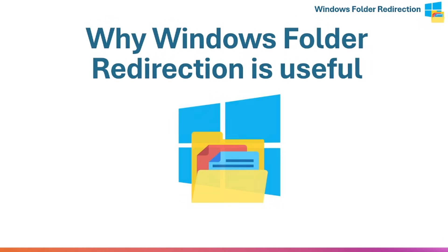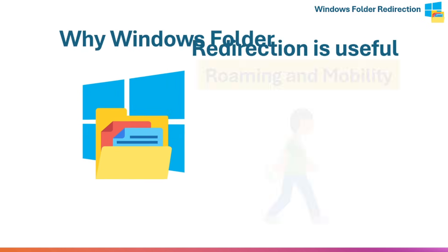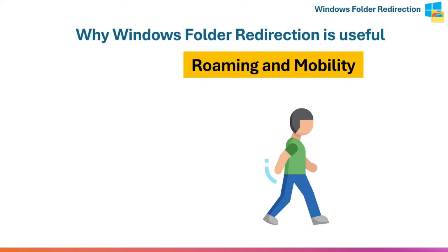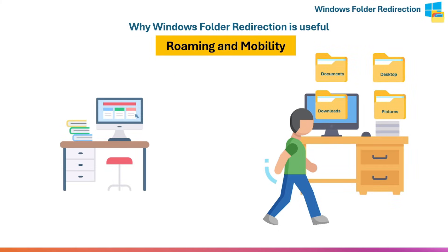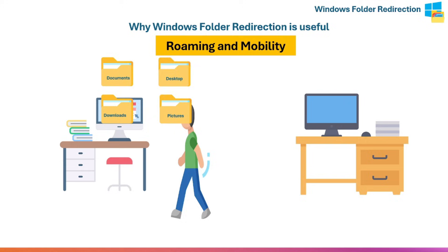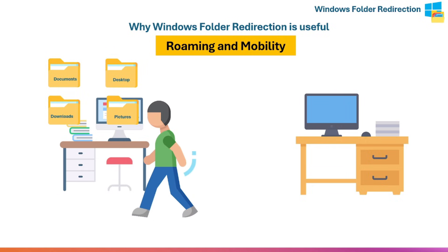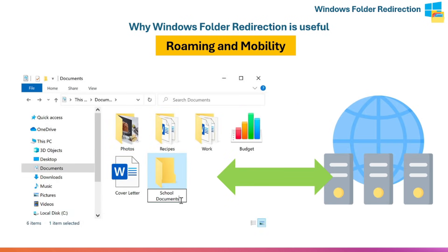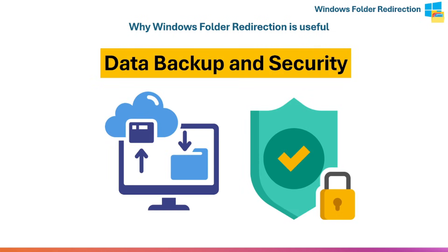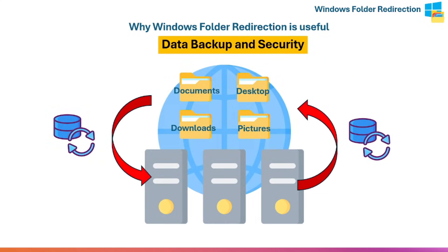Folder redirection is useful for two main reasons. First, roaming and mobility: if users move between multiple computers in an office, school, or lab, their files follow them — when they log into a different computer, their desktop and documents look exactly the same because those folders come from the network. Second, data backup and security: since the folders are on the server, IT can regularly back them up. If the user's local PC fails or is replaced, no data is lost.